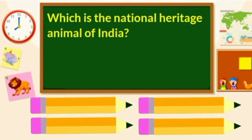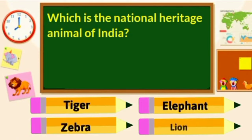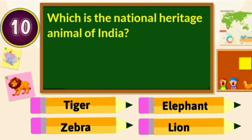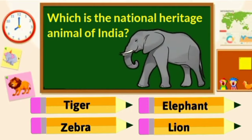Which is the National Heritage Animal of India? Tiger, Elephant, Zebra or Lion? Elephant is the National Heritage Animal of India.